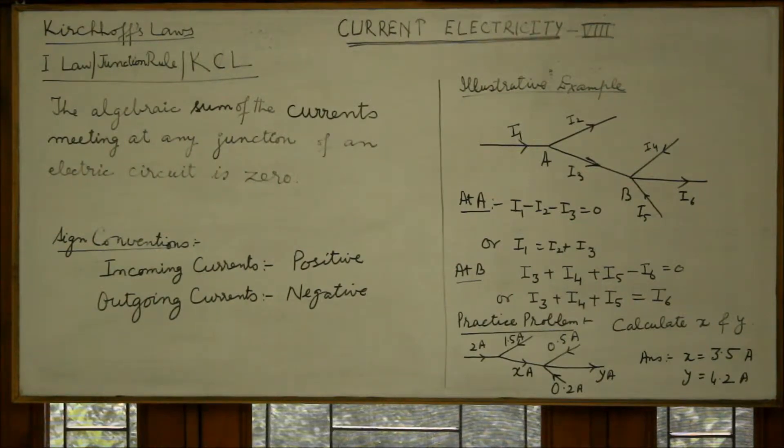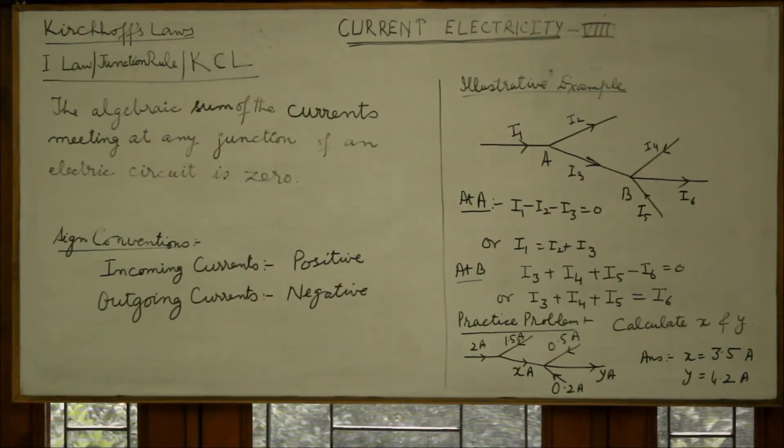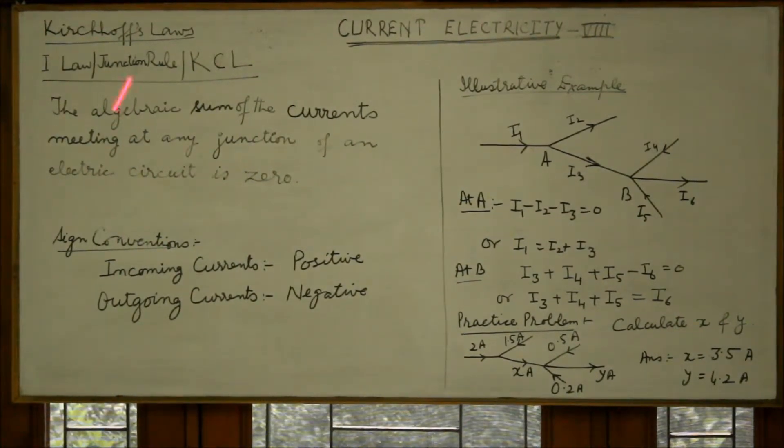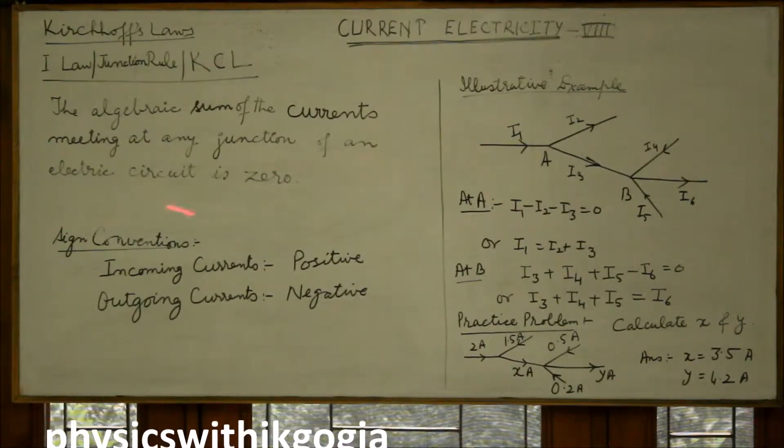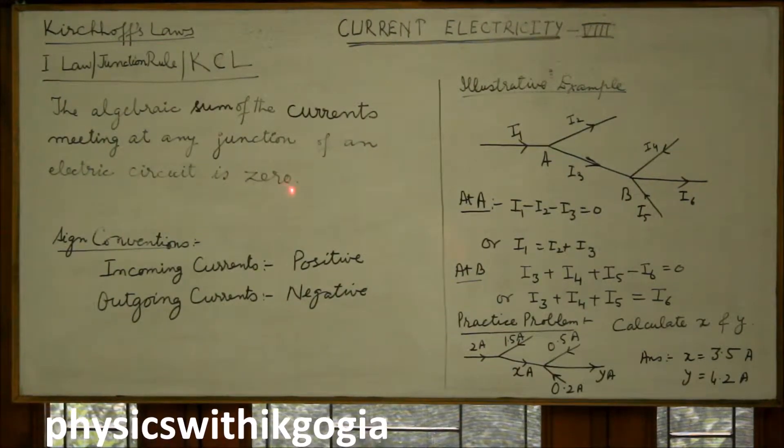For such circuits, we make use of Kirchhoff's laws. The first law is also known as junction rule or Kirchhoff's current law. It states that the algebraic sum of the currents meeting at any junction of an electric circuit is zero.